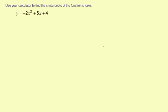Use your calculator to find the x-intercepts of the function shown: y equals negative 2x squared plus 5x plus 4.